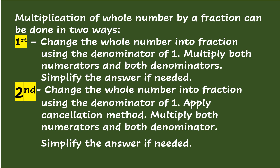Multiplication of a whole number by a fraction can be done in two ways. First, change the whole number into a fraction using the denominator of 1, multiply both numerators and both denominators, then simplify the answer if needed. Second, change the whole number into a fraction using the denominator of 1, apply the cancellation method, multiply both numerators and both denominators, then simplify the answer if needed.